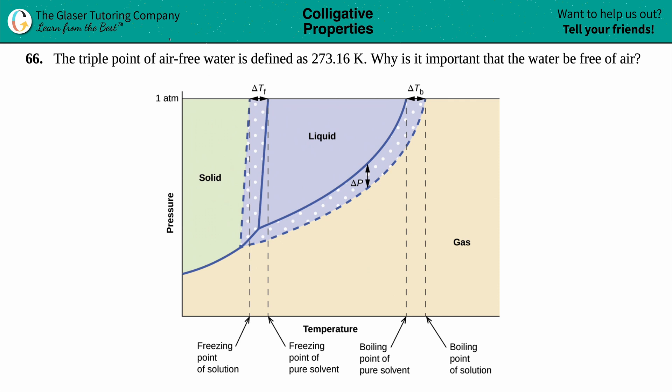Number 66. The triple point of air-free water is defined as 273.16 Kelvin. Why is it important that the water be free of air?